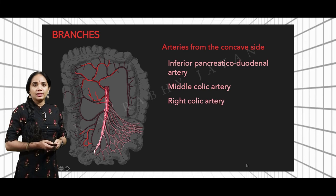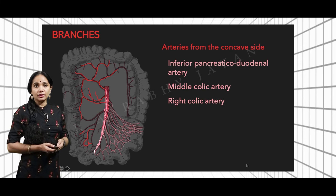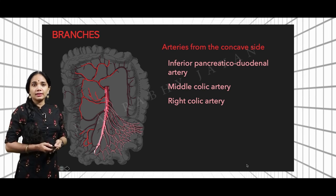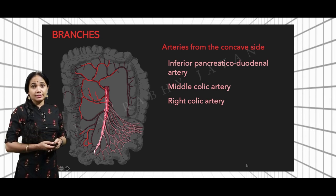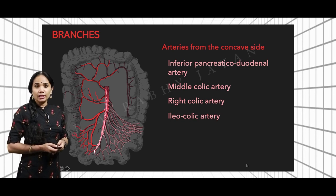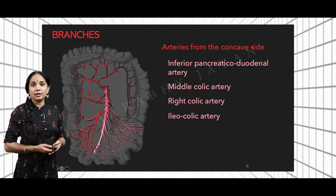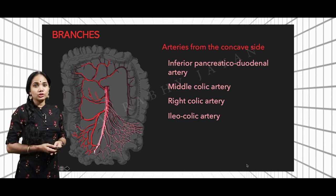The next branch is the middle colic artery, which passes downward toward the right side and immediately divides into a medial and a lateral branch, which anastomose correspondingly with other arteries. The middle colic artery supplies the transverse colon and the right colic flexure. Then there is the right colic artery, the third branch from the concave side, which supplies the ascending colon. Finally, the ileocolic artery supplies the cecum and appendix, as well as the distal-most 10 to 15 centimeters of the small intestine.